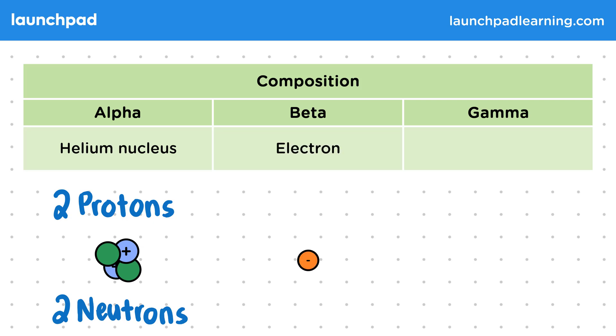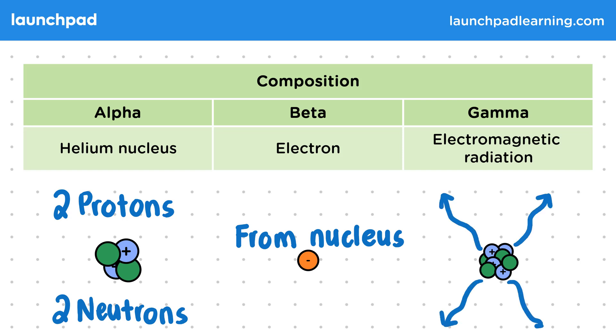Beta radiation is a free electron which originates in the nucleus. A beta particle reduces the number of neutrons by turning one into a proton. Gamma radiation is a high frequency form of electromagnetic radiation, and a gamma ray releases the excess energy of the nucleus.